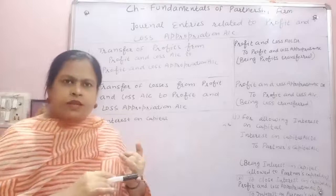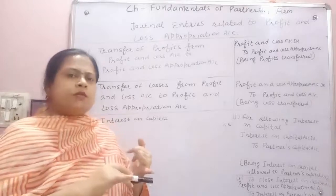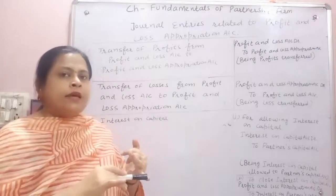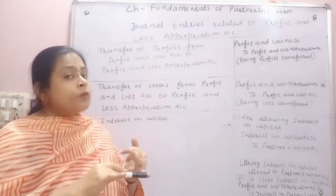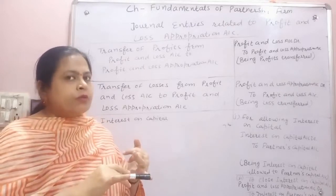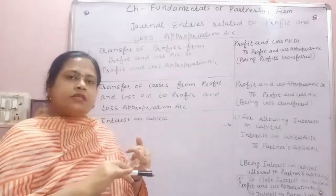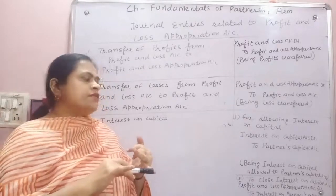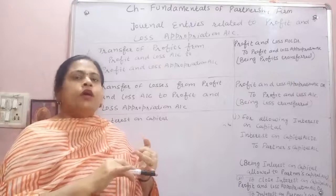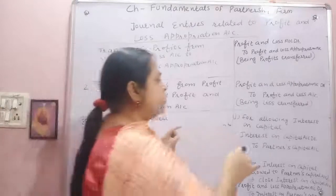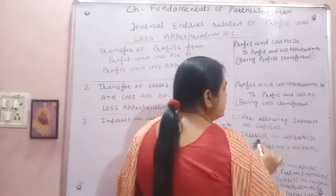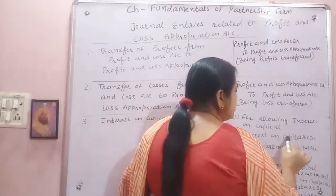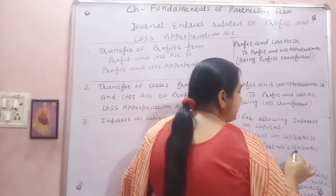Remember that when a businessman is in business, we put money into the business — we provide capital and give interest on it. So this is an expense for the business but income for the partner. This entry is for allowing interest on capital: Interest on Capital Account debit to Capital Account.